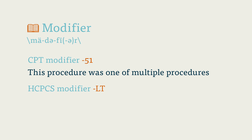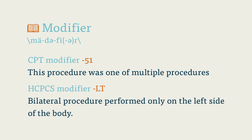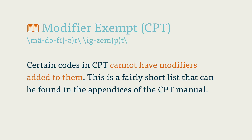The HCPCS modifier LT, on the other hand, describes a bilateral procedure that was performed only on the left side of the body. Modifier-exempt CPT: certain codes in CPT cannot have modifiers added to them. This is a fairly short list that can be found in the appendices of the CPT manual.